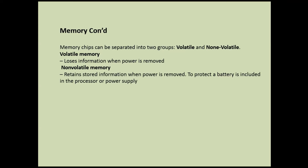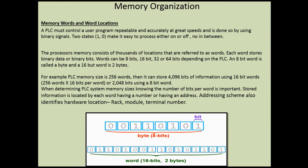Regarding memory organization, memory words, and word locations: a PLC must control the user program repeatedly and accurately at great speeds, and does so by using a binary signal - two states, one and zero - making it easy to process either on or off, not in between. The processor's memory consists of thousands of locations referred to as words. Each word stores binary data or binary bits. Words can be 8 bits, 16 bits, 32, or 64 bits depending on the PLC.